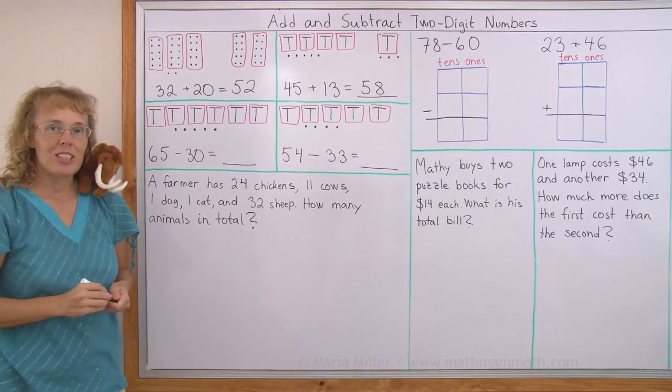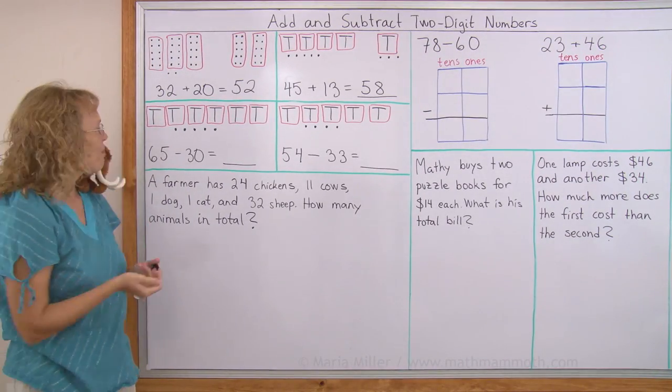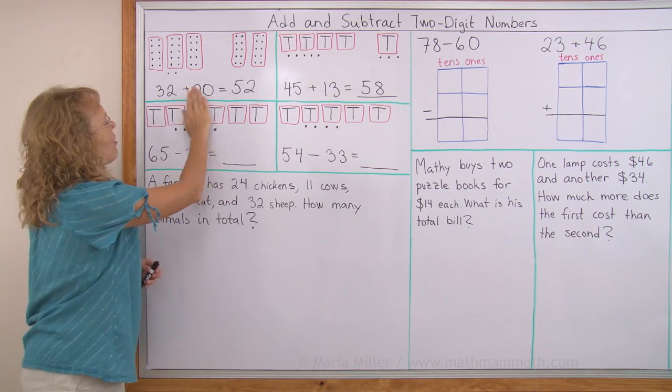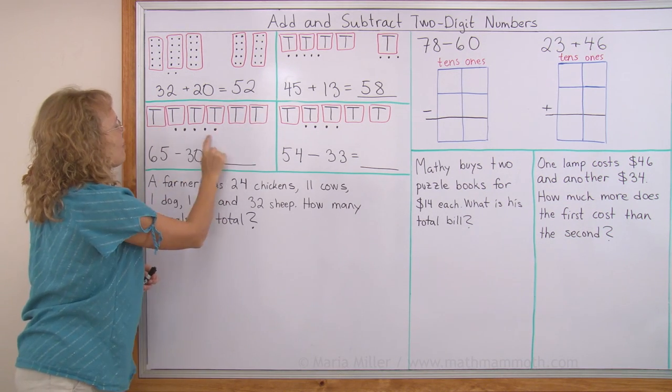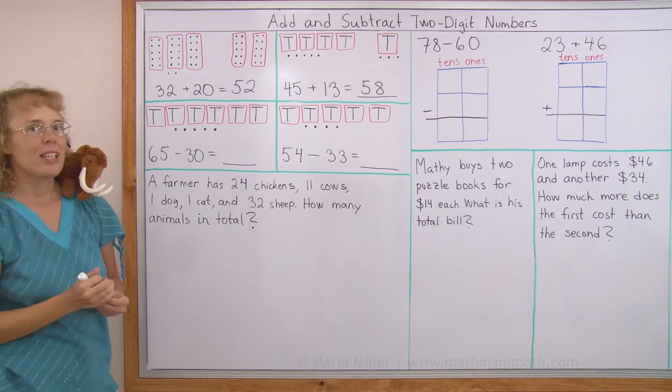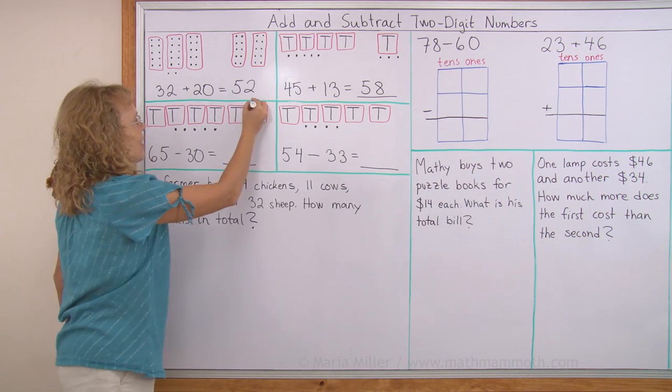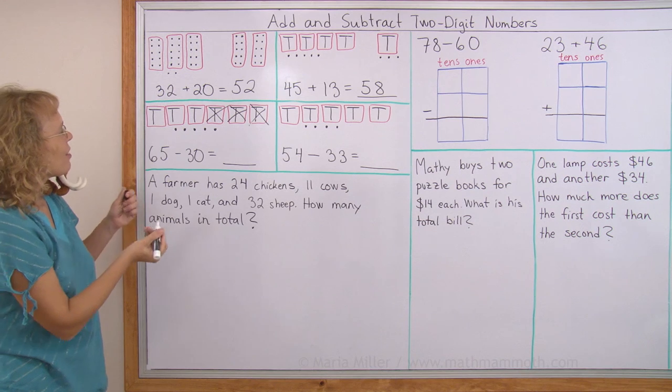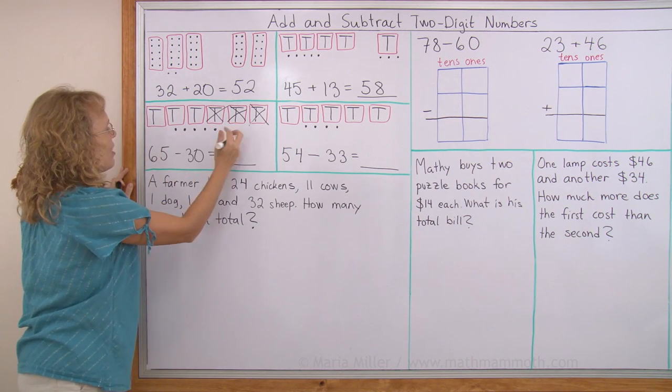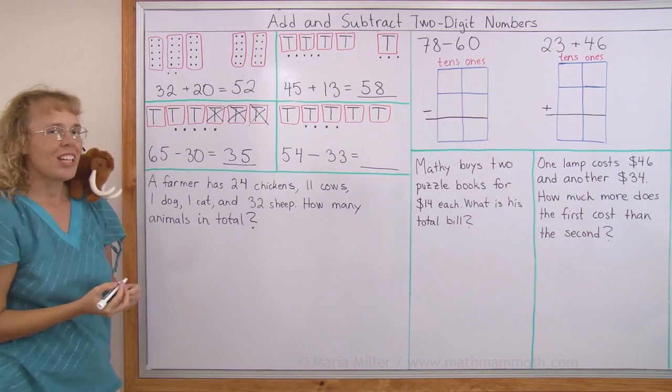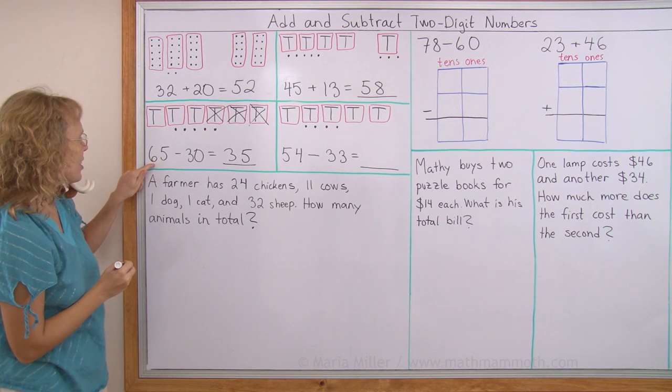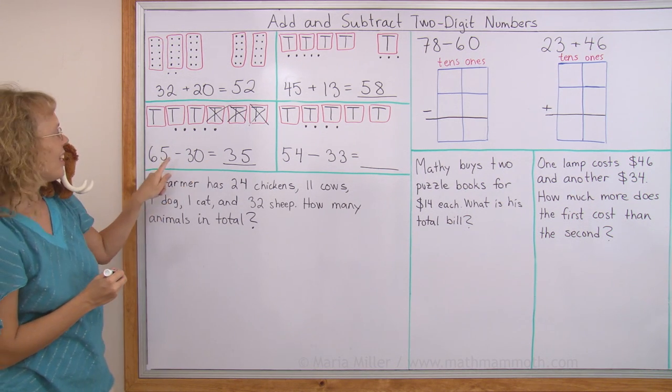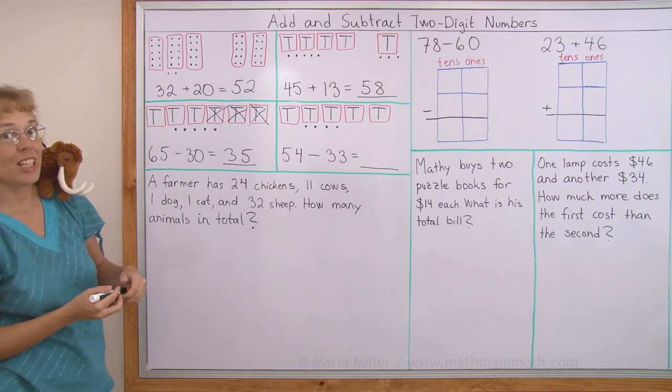And we can also use this model with subtraction. 65 minus 30. It means that I draw 65 here. See? Six tens and five. Minus 30 means that I cross out three tens. This and this and this, for example. So now what do I have left? Three tens and five. Again, you could do this mentally too, thinking of six tens minus three tens equals three tens. And then the five ones does not change.